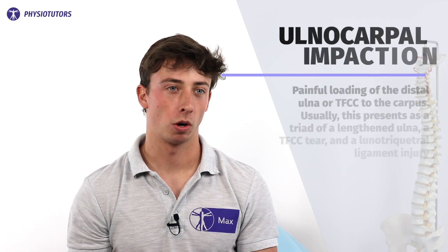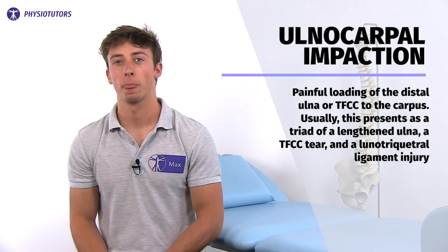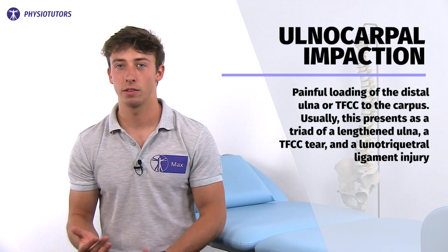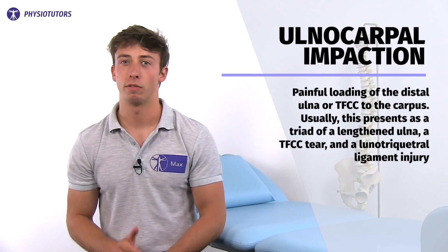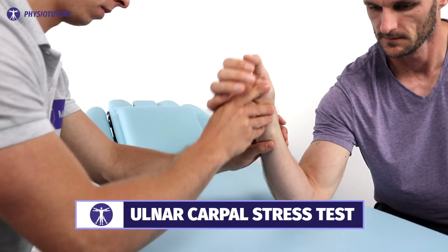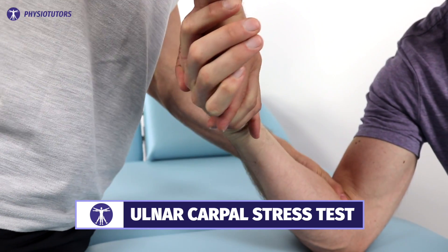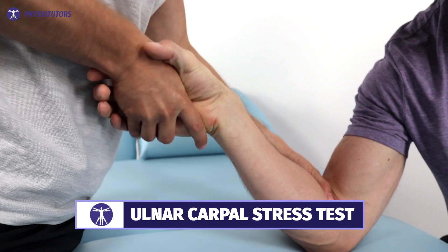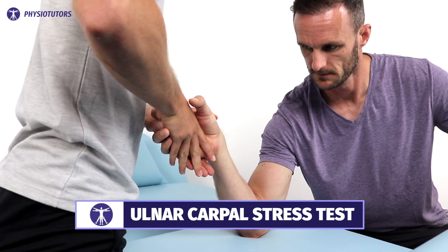Ulnocarpal impaction syndrome describes painful loading of the distal ulna or TFCC to the carpus. Usually this presents as a triad of a lengthened ulna, a TFCC tear, and a lunotriquetral ligament injury. Oftentimes a forceful pronated grip causes pain. The cause can be traumatic due to certain fractures or malunion, or congenital. The ulnocarpal stress test can be used to confirm the suspicion, though it will likely also be positive with TFCC tears or lunotriquetral ligament tears. The test consists of elbow flexion, ulnar deviation and compression of the ulnocarpal joint while pronating and supinating the arm.